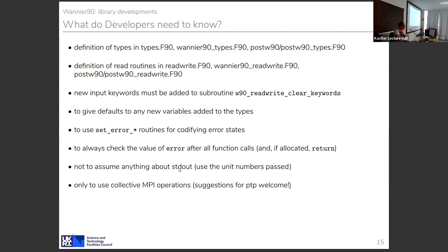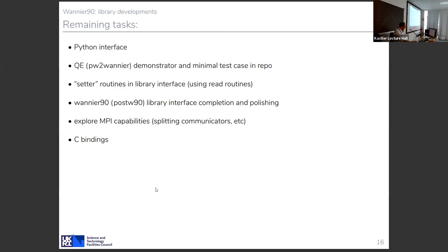Standard error is only touched by the Wannier90 executable — nothing in the library code below the main routines should touch standard error. Regarding the restriction on collective MPI operations: we honestly cannot find a nice way to make point-to-point work. The propagation of error is an intrinsically collective problem.